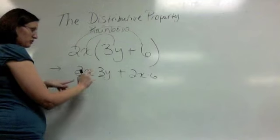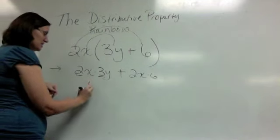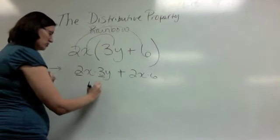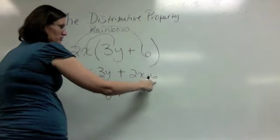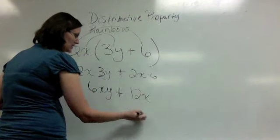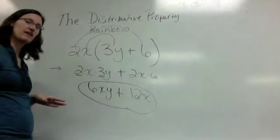Now let's multiply the numbers first. 2 times 3 is 6. And x times y is just xy. 2x times 6 is 12x. And there is our final answer.